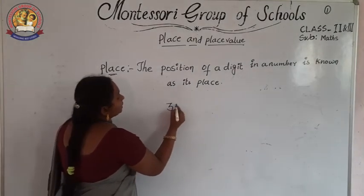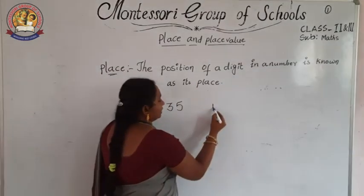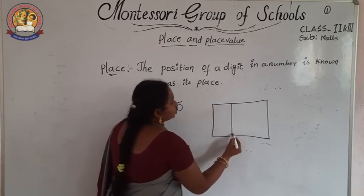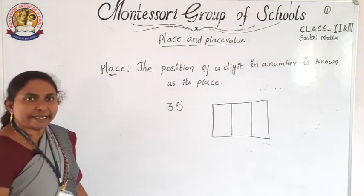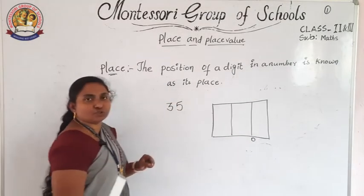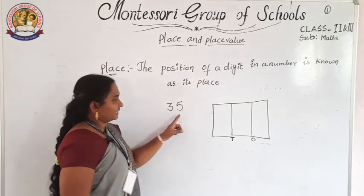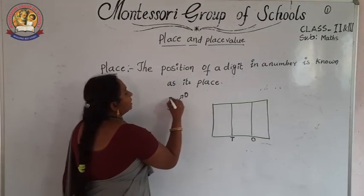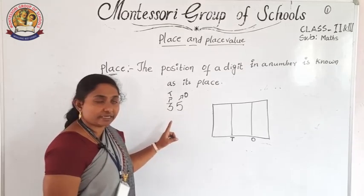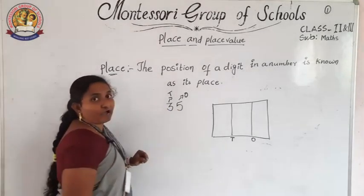Listen carefully. Here, 35. I will take an abacus. In this abacus there are two lines. The first line shows ones, and the next one shows tens. This is the ones place and this is the tens place. Because here, 3 tens are there and 5 ones are there.